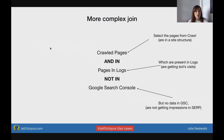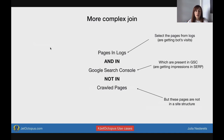A more complex join: pages that are in crawled pages, in logs, but NOT in Google Search Console. This means we've selected pages that are inside the site structure, are getting bot visits, but are not getting any actions in Google Search Console — they are not getting any impressions and clicks. Another example: select pages from logs which are present in Google Search Console, but these pages are not inside the site structure.